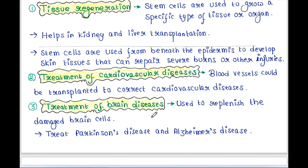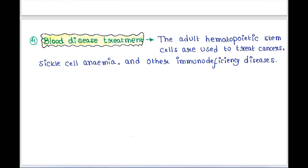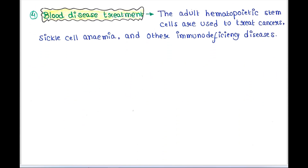For treatment of brain diseases, stem cells are used to replenish damaged brain cells and to treat Parkinson's disease as well as Alzheimer's disease. For blood disease treatment, the adult hematopoietic stem cells are used to treat cancers, sickle cell anemia, and other immunodeficiency diseases.